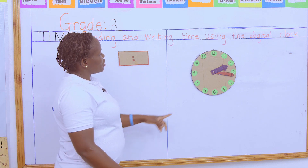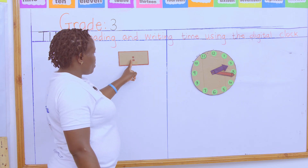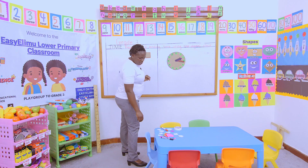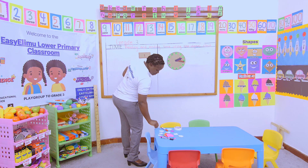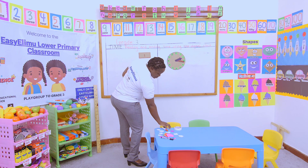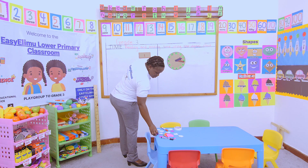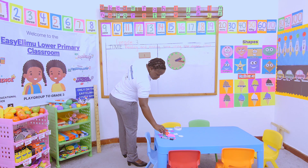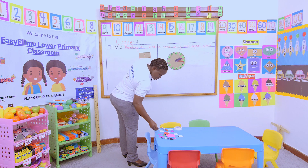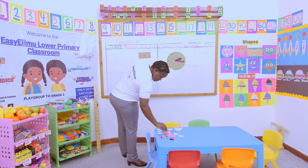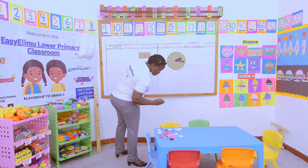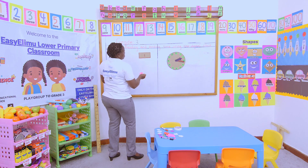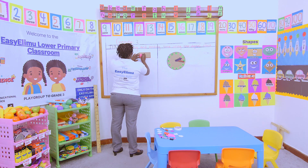Now represent that time on the digital clock face. What am I supposed to do? I'm supposed to get my hour hand. My hour hand is two.